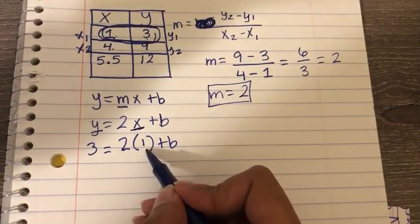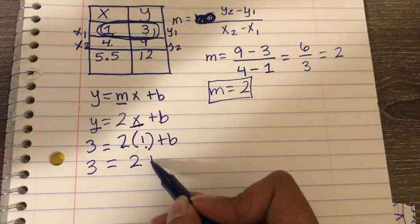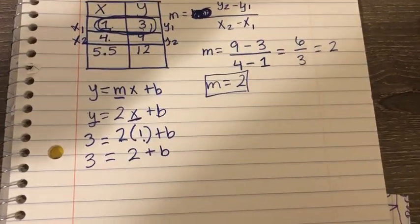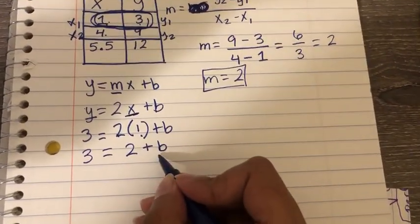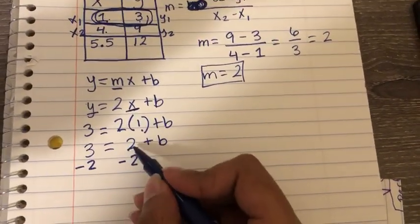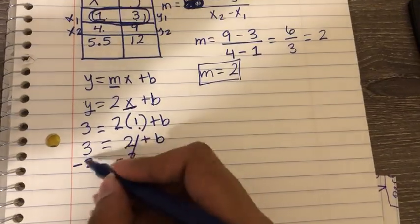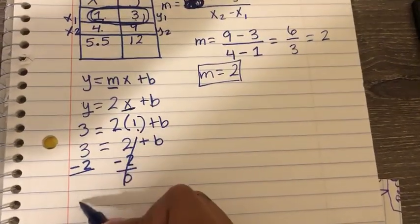So 2 times 1 gives me 2, and I'll rewrite everything, plus b. Now I want to get b alone, so I have to subtract 2 from both sides. 2 minus 2 is 0, so that cancels. And then 3 minus 2 is 1.